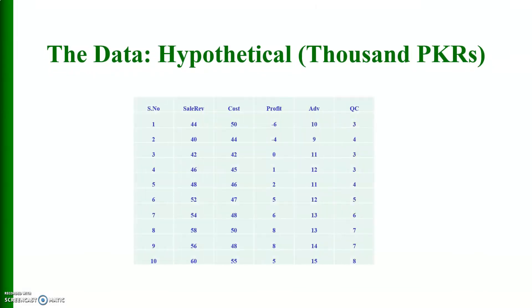Let me first share with you the data. This is some hypothetical data. Column one shows serial numbers, these are sale revenues, these are cost of production, this is profit, this is advertising expenditure, and this is quality control. All these data are in thousands of Pakistani rupees, and column number one is serial numbers.